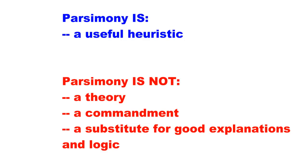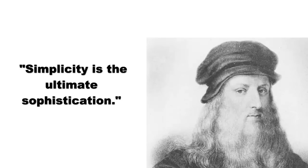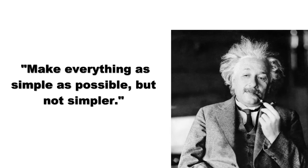Equally important is what parsimony isn't. It is not a theory, it is not a commandment. It is never a substitute for full explanations that require many forces acting in concert, or an equation requiring many variables. It never takes precedence over the better explanation or good logic. This is a general guideline for when two explanations are equally explanatory. Many famous people have restated the principle over the years. Isaac Newton wrote, 'We are to admit no more causes of natural things than such as are both true and sufficient to explain their appearances.' Consider Leonardo da Vinci's elegant statement, 'Simplicity is the ultimate sophistication.' My favorite restatement is from a questionably attributed quote of Einstein: 'Make everything as simple as possible, but not simpler.'